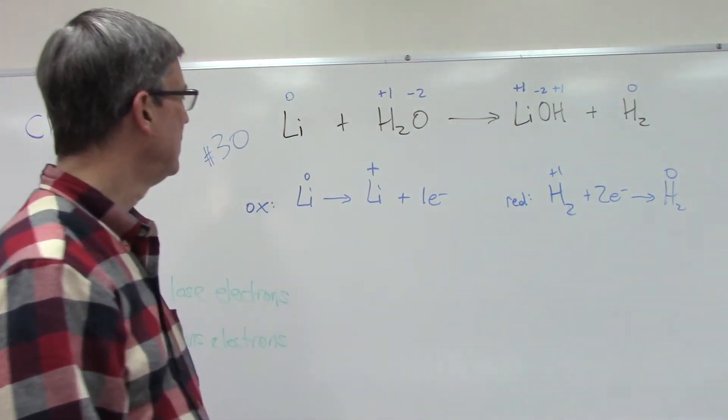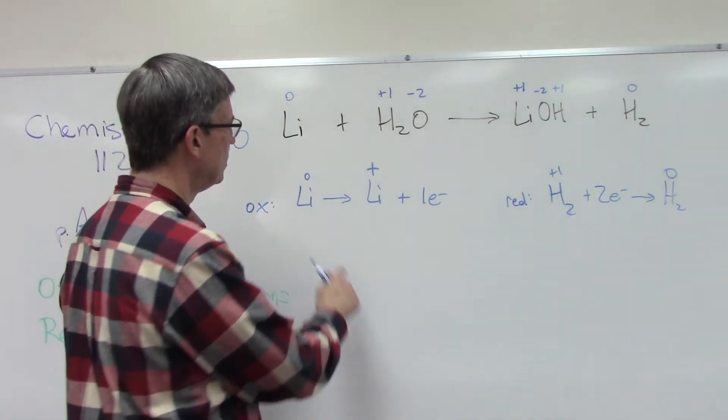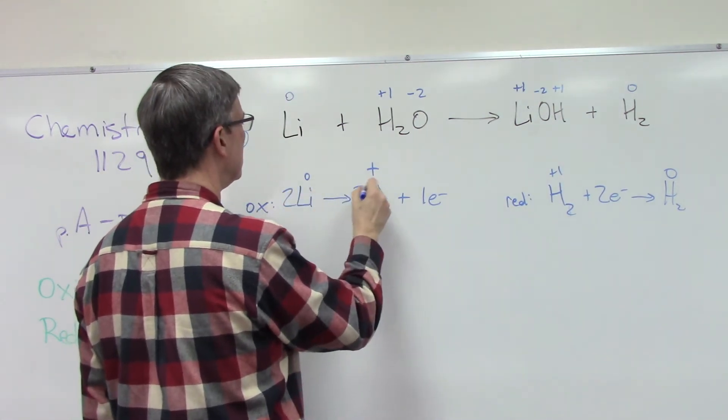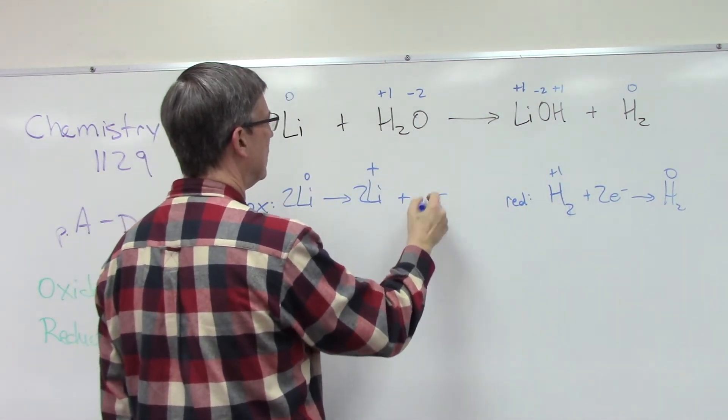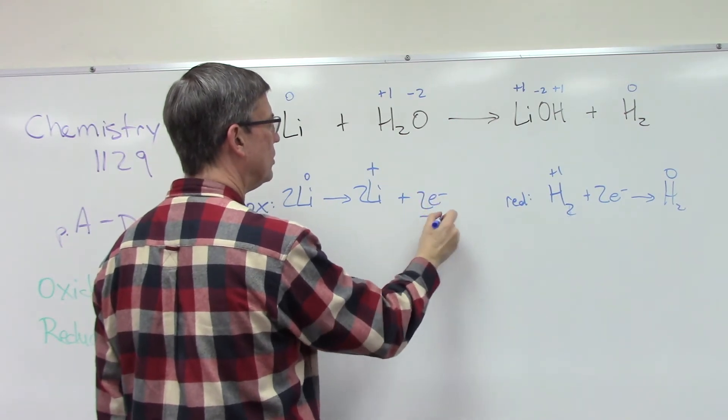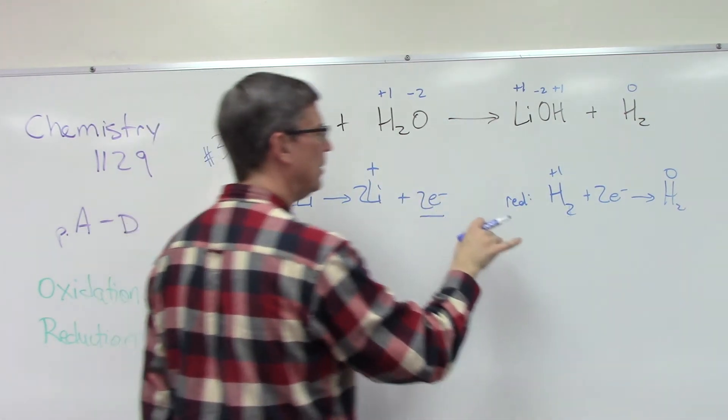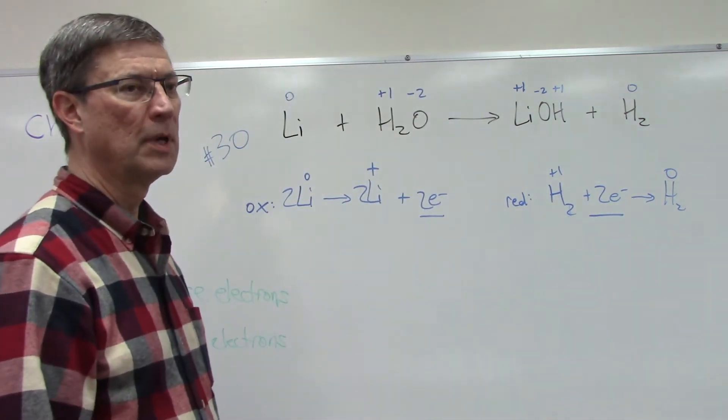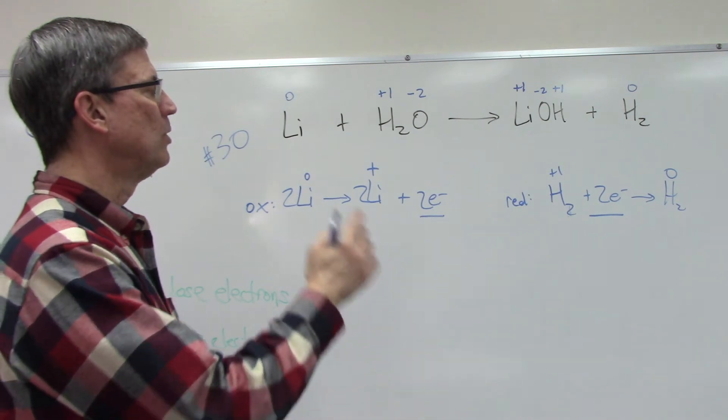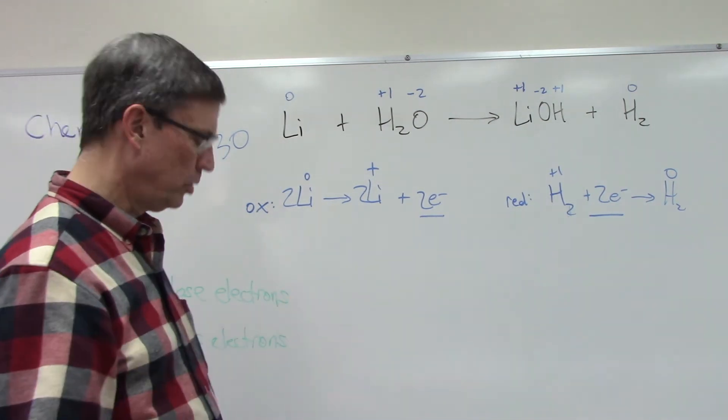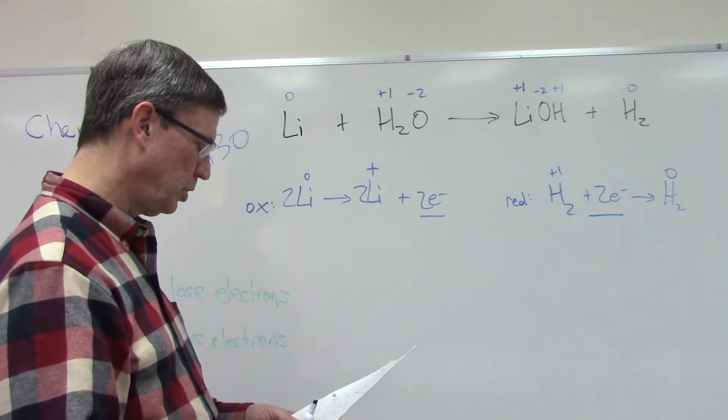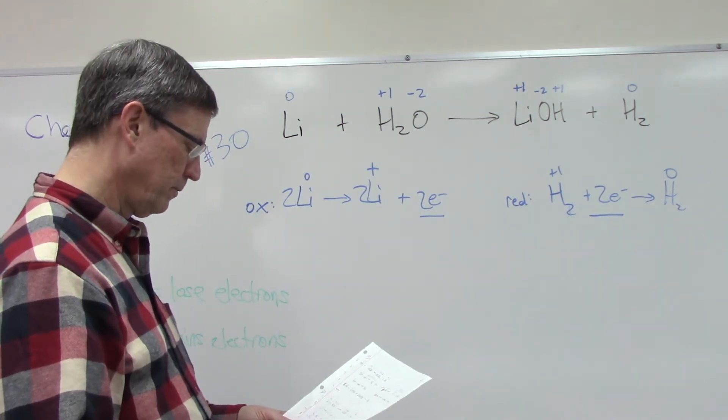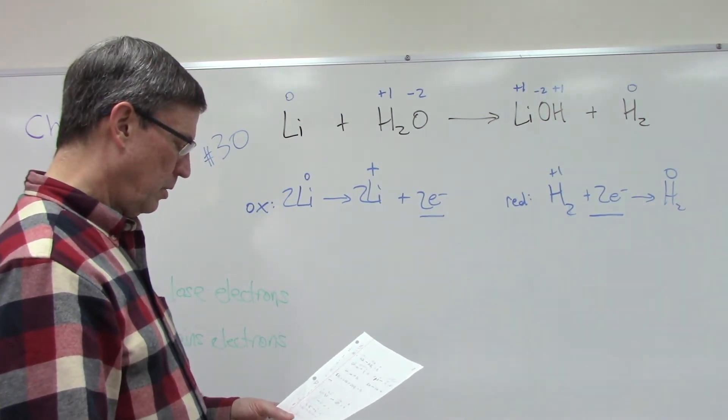So now the next step is we need to change the coefficients on this in order to have the same number, two electrons being given off on the product side, two electrons on the reactant side. So now this redox equation should work. I'm going to look at my cheat sheet, make sure I'm not forgetting anything or making a boo-boo like I did last time.